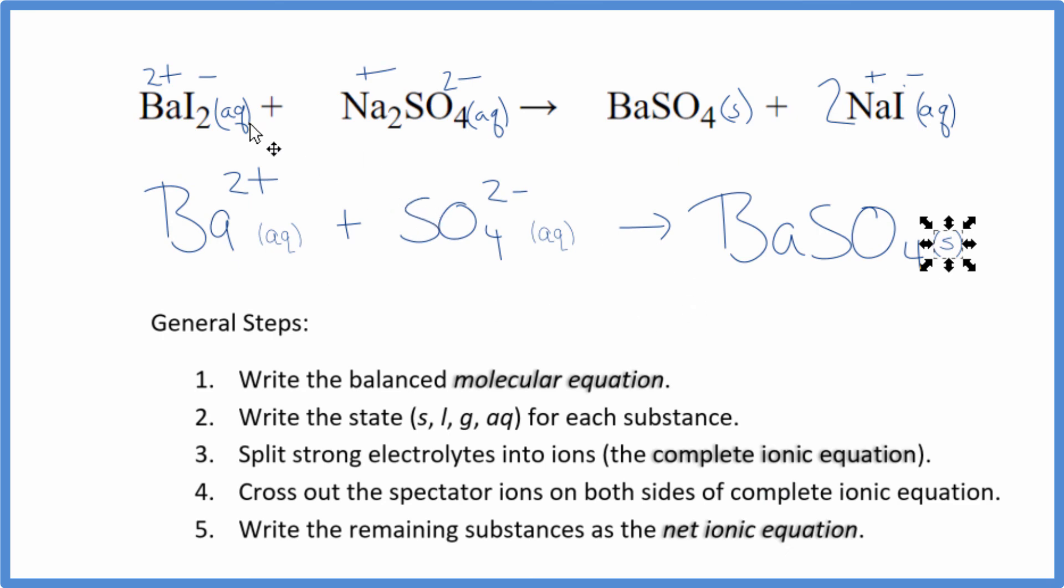So this is the balanced net ionic equation for barium iodide and sodium sulfate. You'll note charge is conserved. We have a 2 plus and a 2 minus. That gives us a net charge of zero. Over here, neutral compound, net charge of zero. The atoms, they're balanced as well. So in this reaction, these two compounds, this cation and ion, come together. They form this insoluble precipitate, falls to the bottom of the test tube.